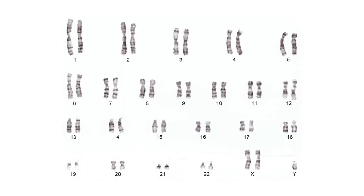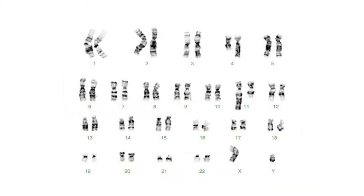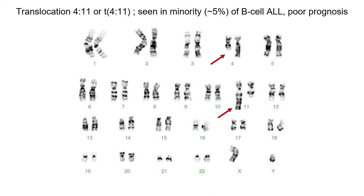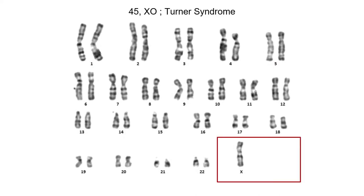The next few slides are for practice. Given this karyogram, this is 47-XXY, also known as Klinefelter syndrome. Here we have a translocation between chromosome 4 and 11, seen in about 5% of B-cell ALLs and portending a poor prognosis. And here is 45-XO, also known as Turner syndrome.